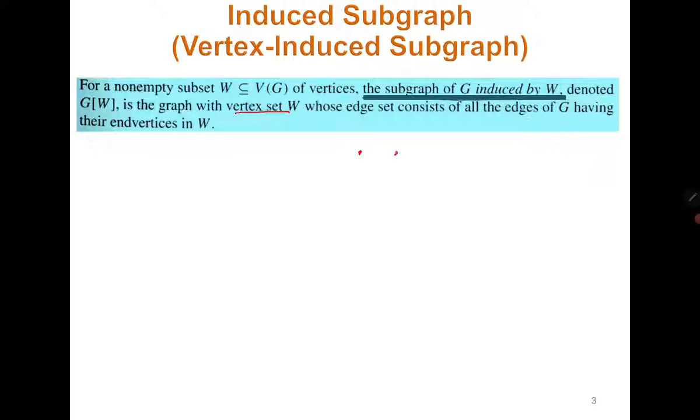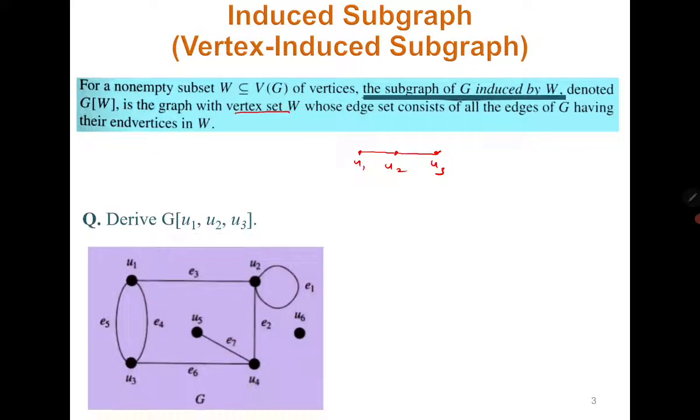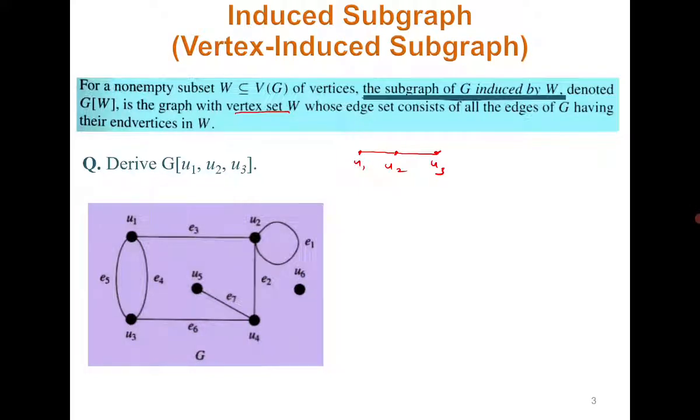This means if you consider W to be U1, U2, U3, then all the edges which are incident to U1, U2, U3 must also be included in the induced subgraph. For example, if we need to find the subgraph induced by U1, U2, U3, then we mark U1, U2, U3 and consider all the edges which have their endpoints as U1, U2, U3.